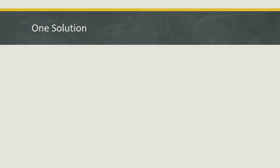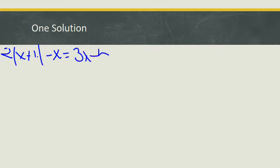Okay, so as we've been evaluating and solving absolute value equations, we've seen that we can have two possible solutions, and we've also seen situations where we have no solution. And so, as you might guess, we're now going to look at situations where we might, in fact, only have one solution. I've got: 2 times the absolute value of x plus 1, minus x, equals 3x minus 4.